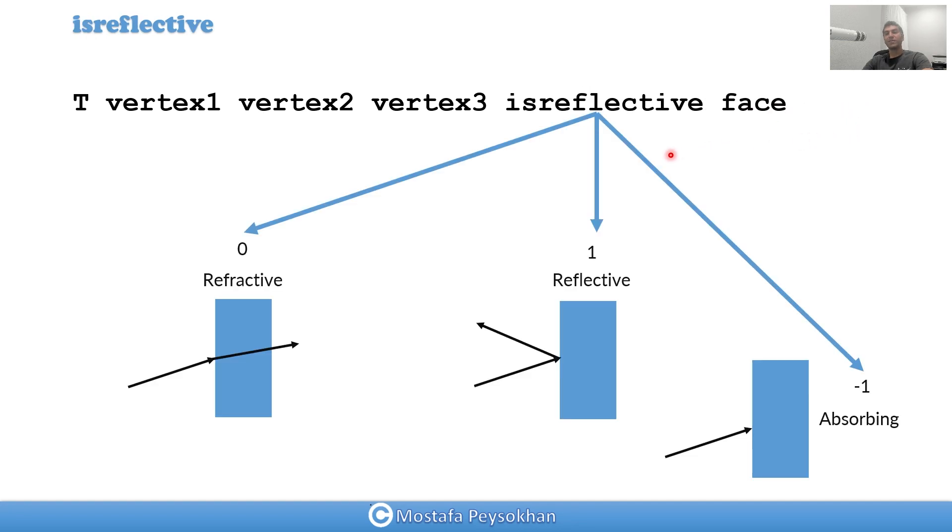For is-reflective, you can actually put 0, which means that that surface is refractive, like a surface of glass, that the beam is going into that surface. If you put 1, it means that the surface is reflective, so it's going to reflect the light based on the law of reflection. And if you put negative 1, it means that that surface is absorbing. So negative 1 means the power goes to 0.